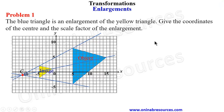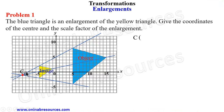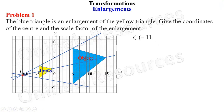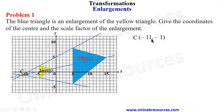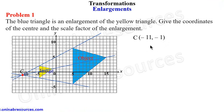We now get the coordinates of C. The x-coordinate is negative 11 since each line is one unit. Going to the y-axis, this point is negative one. So the coordinates of the center are negative 11 comma negative 1.